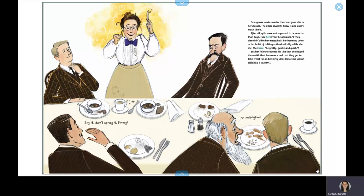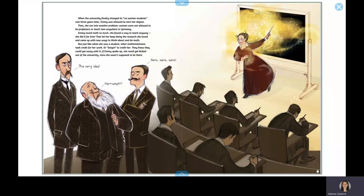But her fellow students did like that she helped them with their homework and that they got to take credit for all her nifty ideas since she wasn't officially a student. When the university finally changed its no women students rule three years later, Emmy was allowed to earn her degree. Then she ran into another problem.